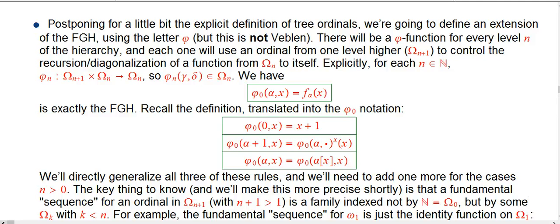Let's postpone for a little bit the explicit definition of what exactly these tree ordinals are. I've given the basic idea - they are ordinary ordinals with fundamental sequences attached. We're going to define an extension of the fast-growing hierarchy using the letter lowercase phi. This is not the Veblen function, so sorry about the notational collision. There will be a phi function for every level n of the hierarchy, and each one is going to use an ordinal from one level higher to control the recursion and diagonalization of a function from a certain level to itself.